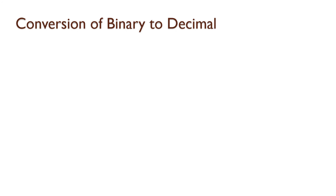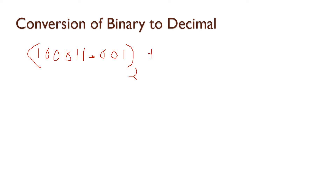Conversion of binary to decimal: the previous output binary value is 100011. Now converting back to decimal — base of binary is 2, base of decimal is 10. Simple logic: shortcut method using powers of 2.